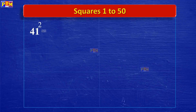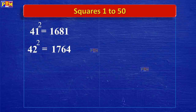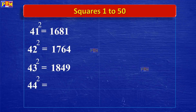41 squared is 1,681. 42 squared is 1,764. 43 squared is 1,849. 44 squared is 1,936. 45 squared is 2,025.